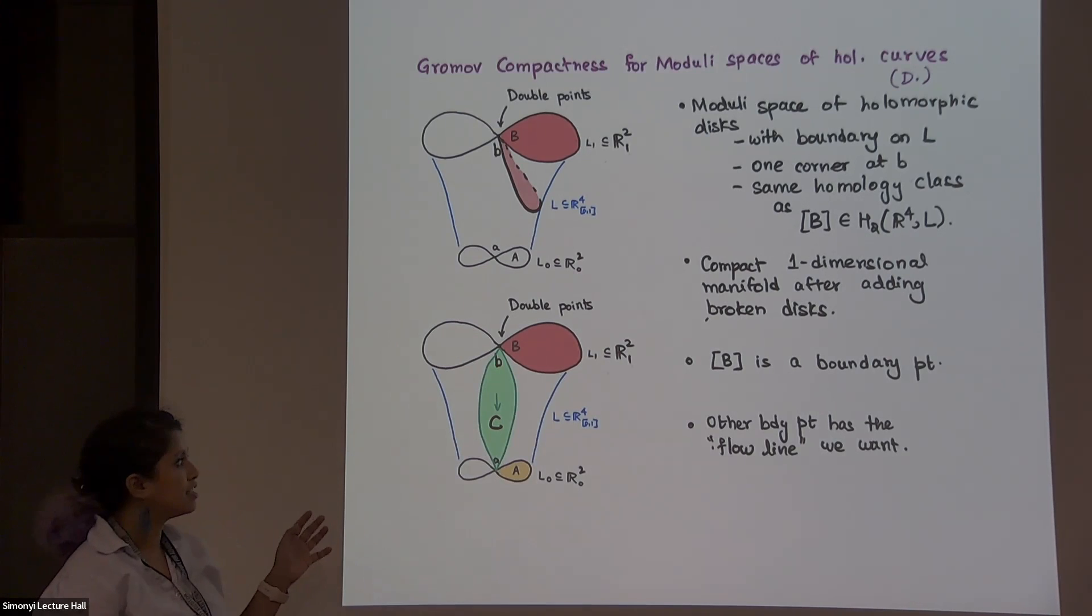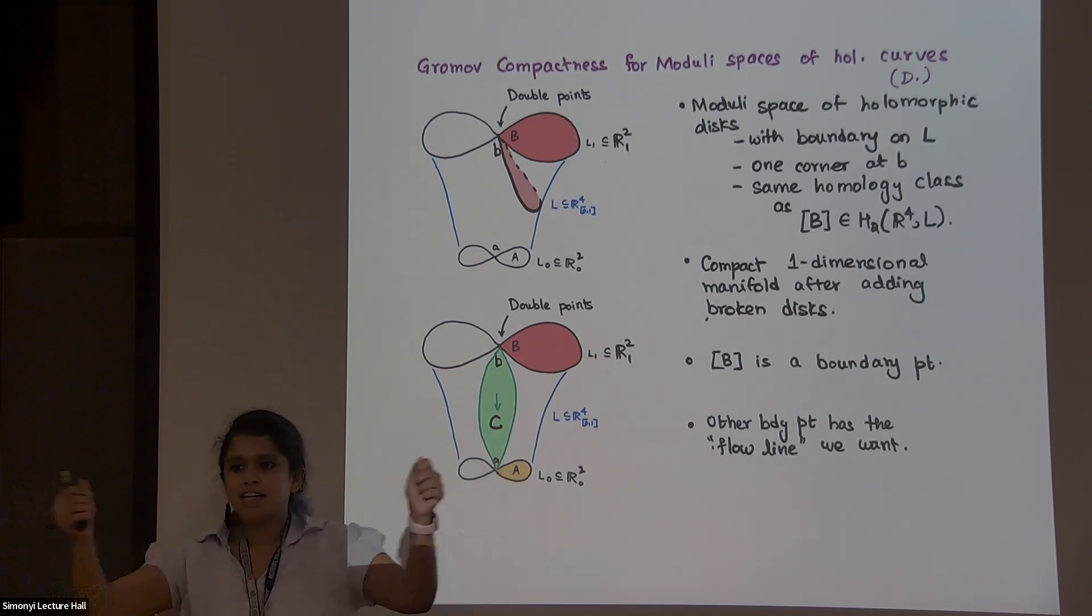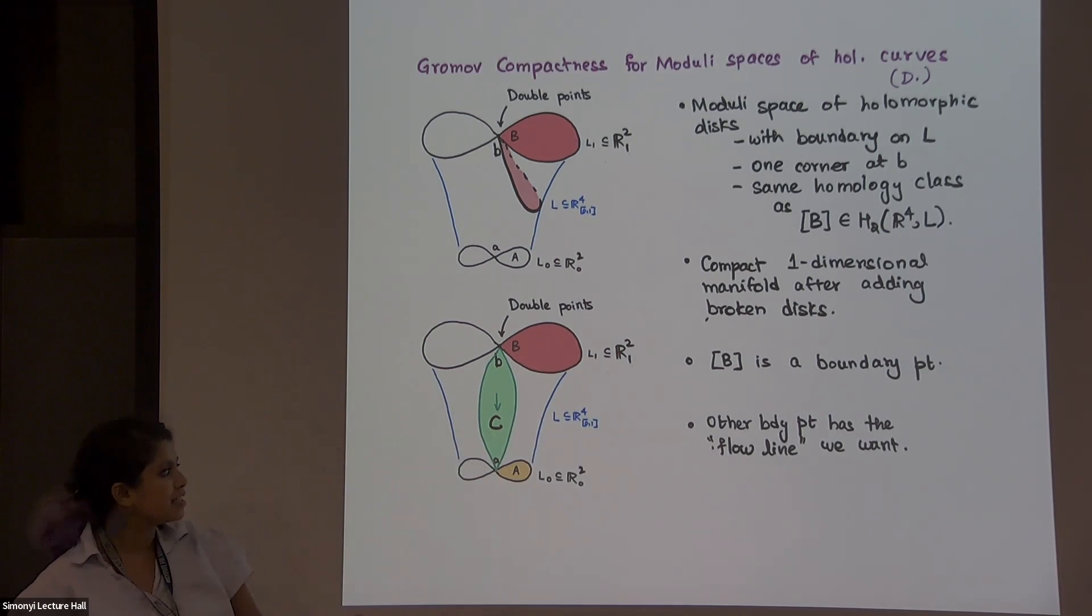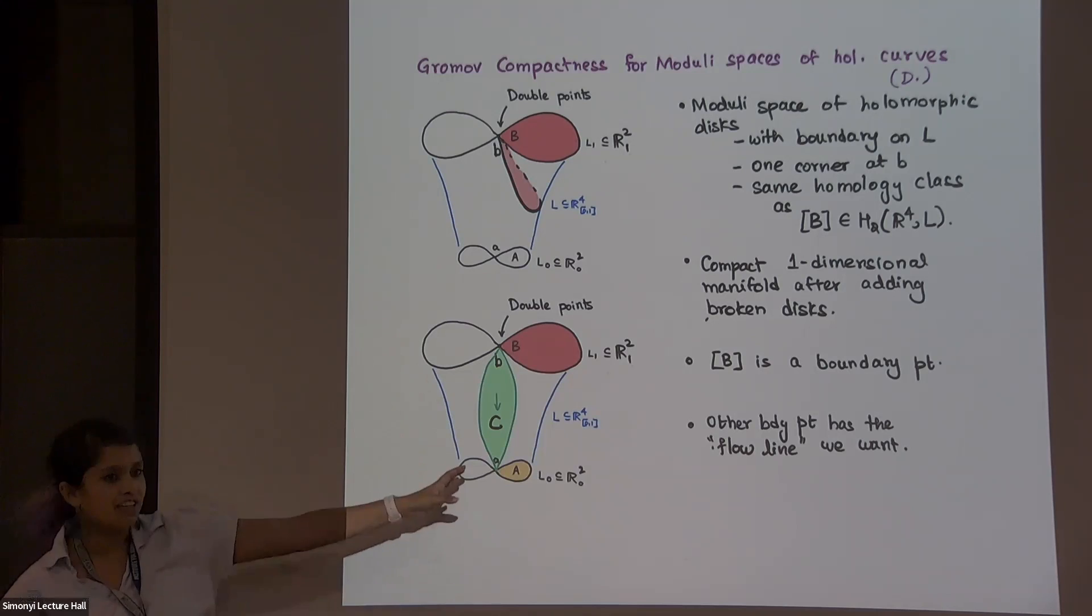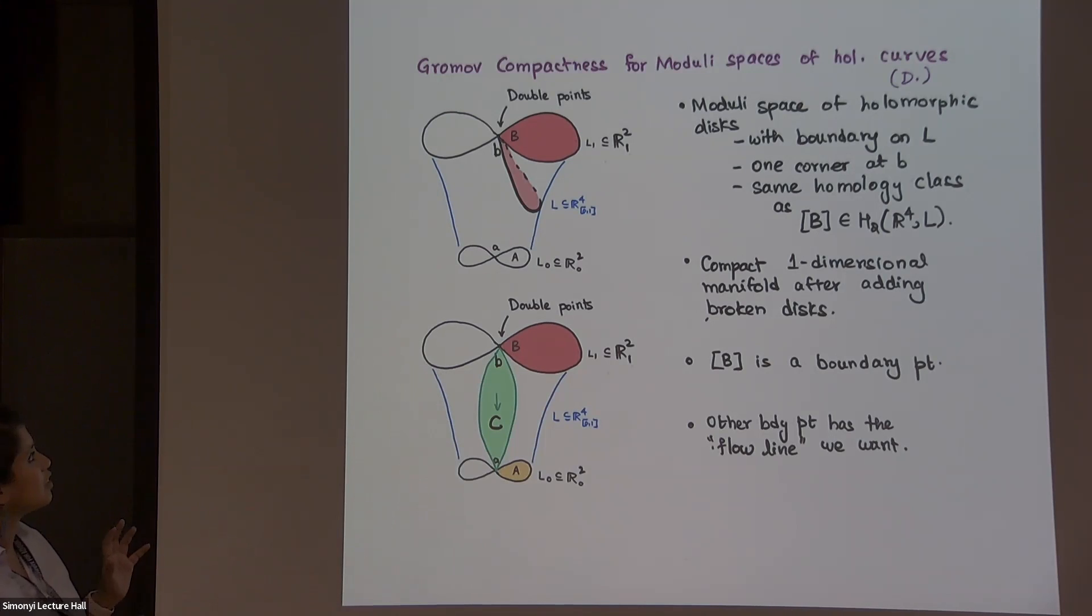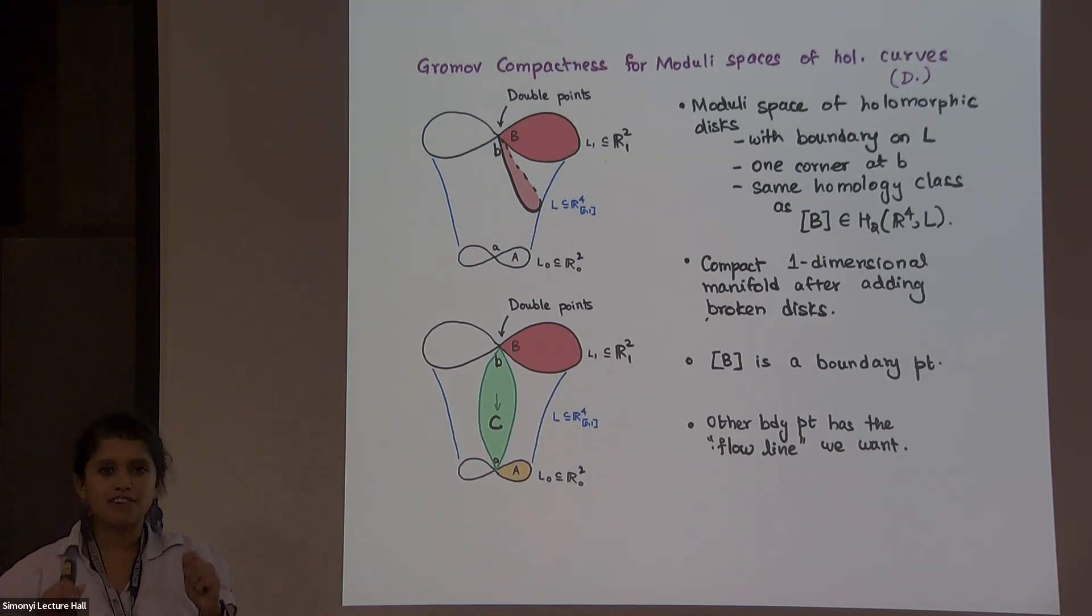So now it turns out that the B that we started with is a boundary point of this one-dimensional moduli space. One-dimensional moduli spaces have even number of boundary points. So now you look at the other boundary point, and that is this very suggestively drawn C and B with the A over here, the combination. And this C that you see here is the flowline that we are looking for. So because of Floer theory, you think about studying holomorphic things, but you use different techniques there to find the holomorphic strips that you want. Great.